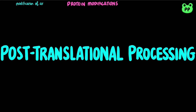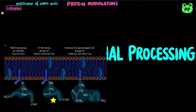Modifications of amino acids include lipidation. Myristoylation refers to the attachment of the 14-carbon saturated fatty acid myristic acid, typically to the N-terminal glycine residue of a protein. Palmitoylation refers to the addition of the 16-carbon saturated fatty acid palmitic acid, typically to the N-terminal cysteine residue.